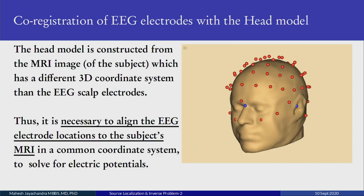We were talking about models, so let us consider the head model. We need the MRI image of the subject, which has a different 3D coordinate system than the EEG electrodes. We need to align the EEG electrodes with the subject's MRI in a common coordinate system to solve these problems. Looking at the picture on the right, the blue dots are the fiducial markers for MRI. You have the nasion on the nose, the inion at the back, and two preauricular ridges for the ears. The red dots are all EEG electrodes. We have to synchronize both; otherwise we will not get the right solution. The physiology has to be synchronized with the anatomy.